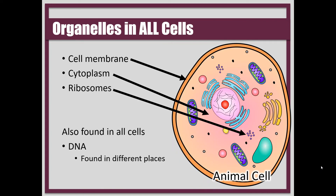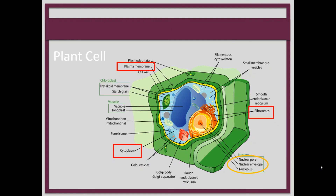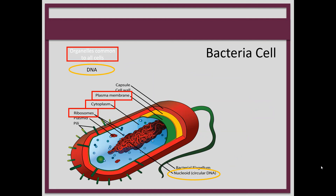There are organelles that are present in all cells — both prokaryotes and eukaryotes. Those are the cell membrane, the cytoplasm, the ribosome, and DNA. DNA is going to be found in different places in prokaryotic cells than in eukaryotic cells, but both have DNA. Here's a plant cell: it has a plasma membrane or cell membrane, cytoplasm, ribosomes, and DNA found in the nucleus. And a prokaryotic cell still has a plasma membrane, cytoplasm, ribosomes, and DNA.